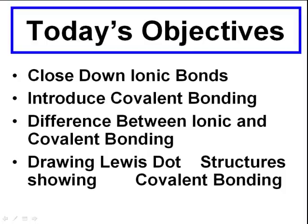In order to do so, we're going to be highlighting some things, such as the differences between ionic and covalent bonds. In the next video, we'll get to the next objective, which is drawing Lewis dot structures that show and demonstrate covalent bonding. For right now, we're focusing on the first three bullets.